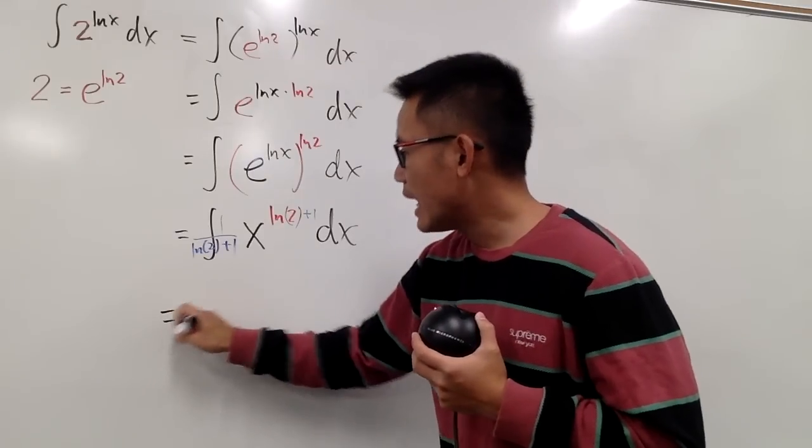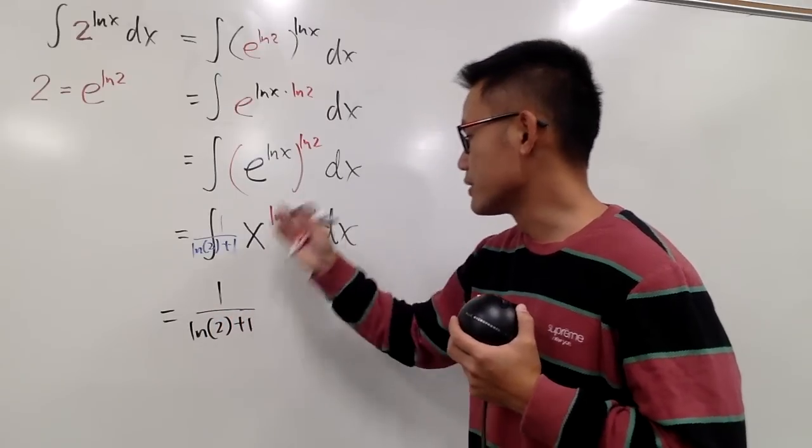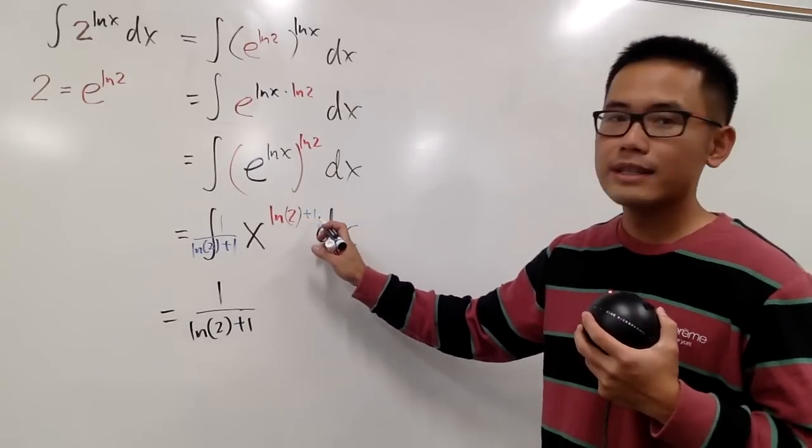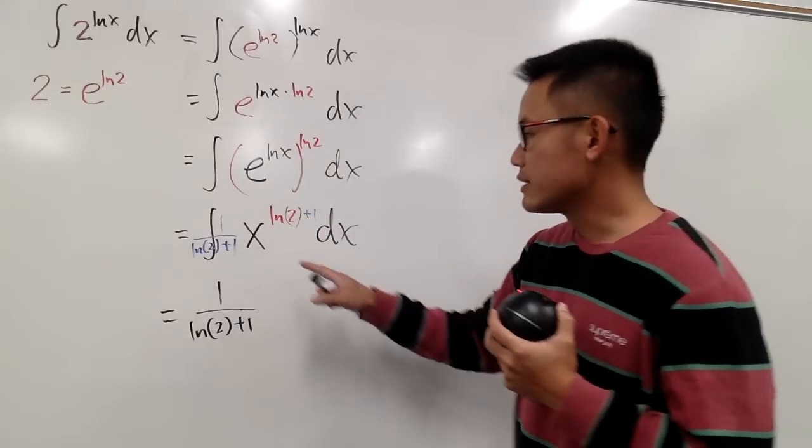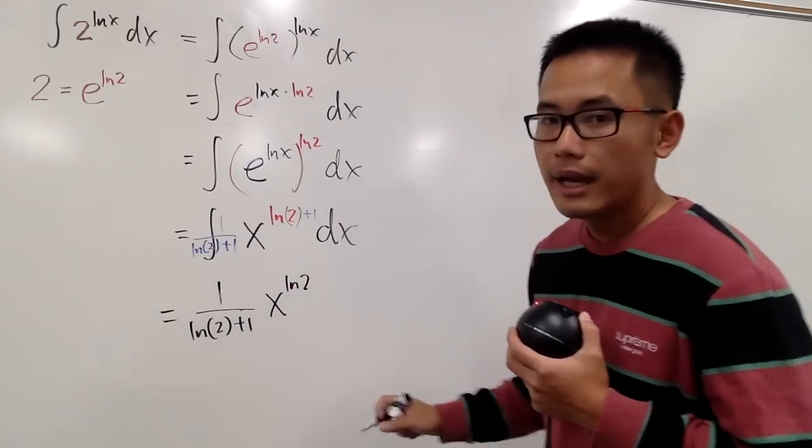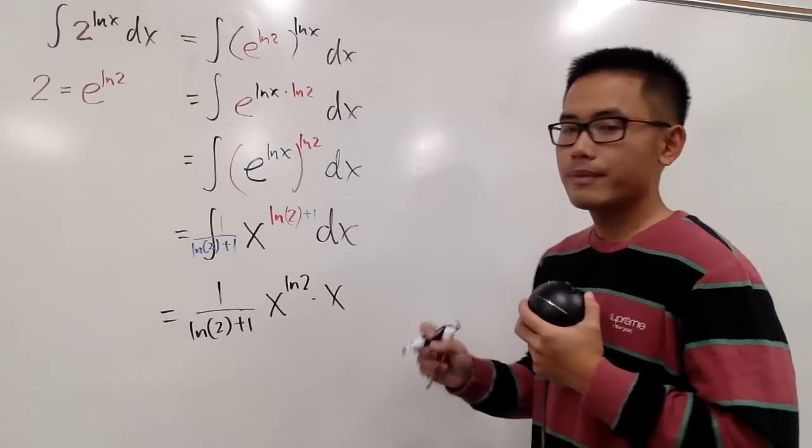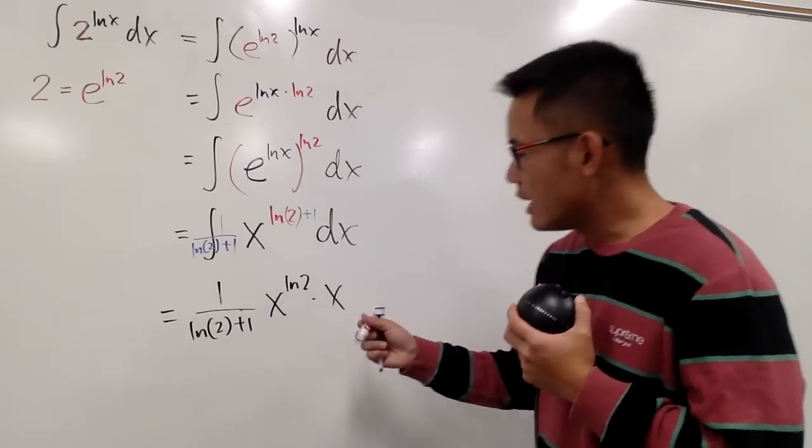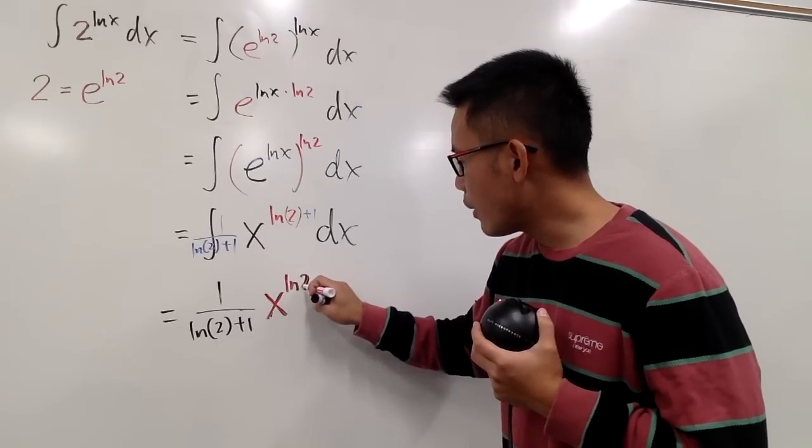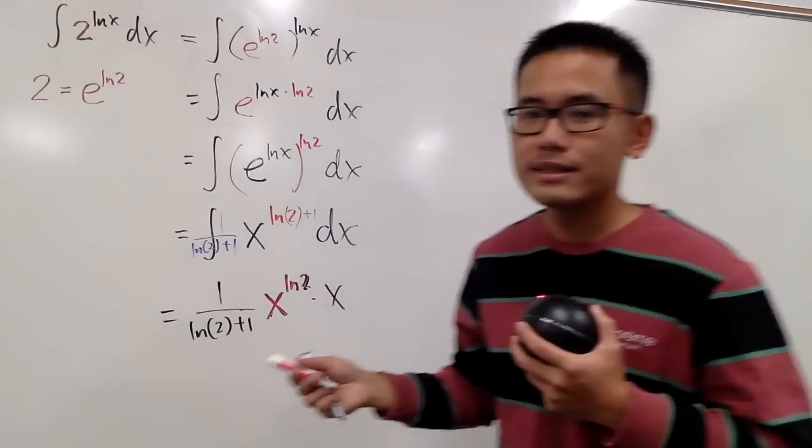And now we have 1 over natural log of 2 plus 1, because some viewers want me to say that. And then we have the x to the ln 2 plus 1 power, right? Let me write it down as following. Let me put it down as x to the ln 2 power, like this. And then multiply by x to the first power, like that. Why do you want to do this? Because right here, the x to the ln 2 power, this guy is just the same as the original, 2 to the ln x, right?